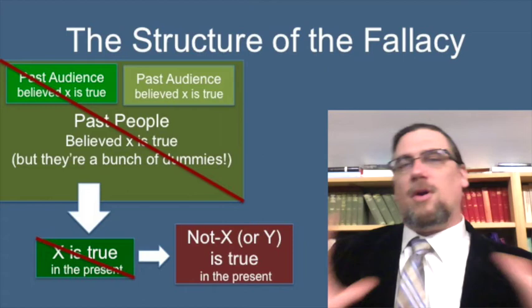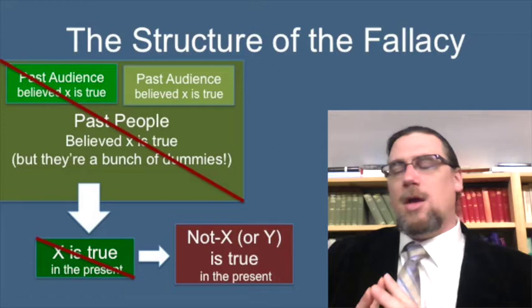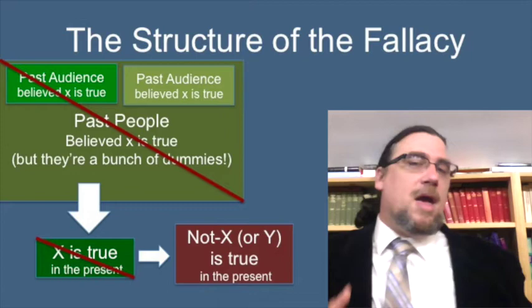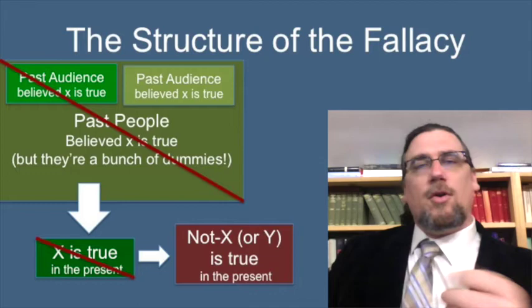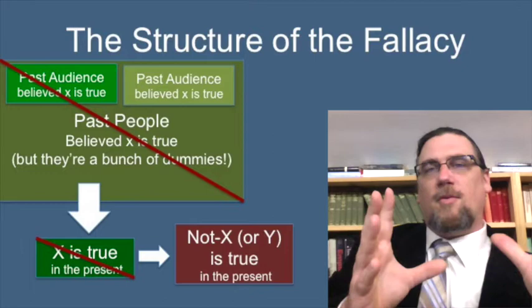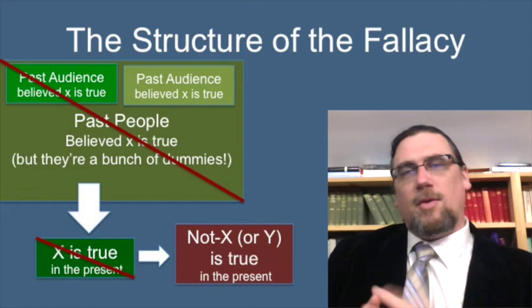If we want to represent this graphically, this is one of those contrast arguments — similar to straw man or the appeal to exclusivity — where because something else is bad, something else is good, or because something else is false, something else is true. So what we've got first is an argument from the past: past people believed that X is true, and therefore X is true in the present.